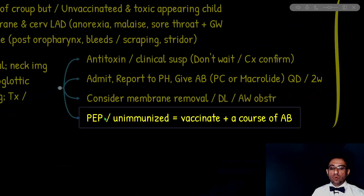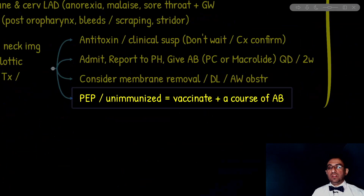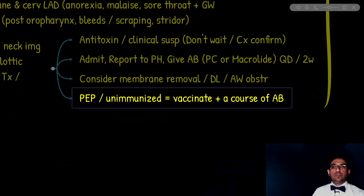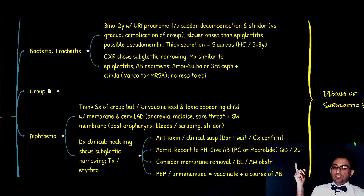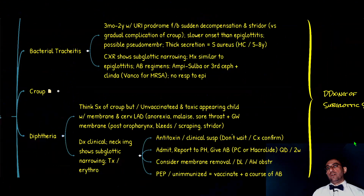Post-exposure prophylaxis for contacts of a diphtheria case: for the unimmunized, provide vaccination and a course of antibiotics. Remember the other condition that required post-exposure prophylaxis was epiglottitis for unimmunized patients. This finishes our discussion of the three important differential diagnoses of subglottic stenosis.